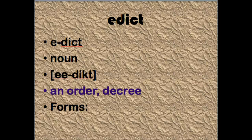Our next word is edict. An edict is some sort of order issued by someone in charge, or a decree issued by someone in charge or some governing body. For those of you in second and third period who are reading Night, this was one of our section vocabulary words as well.